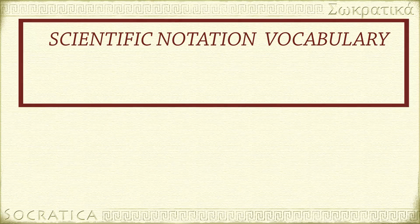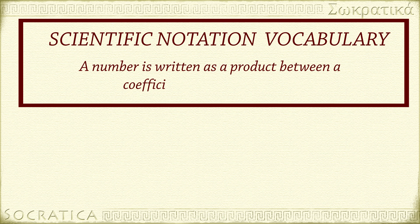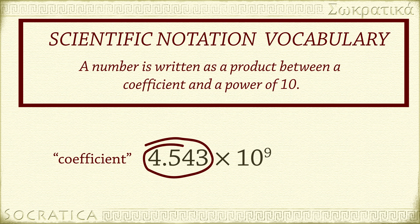A quick word about vocabulary. We say that in scientific notation, a number is written as a product between a coefficient and a power of 10. Here you can see on the left is the coefficient. It's always a number between 1 and 10. The coefficient is multiplied by a power of 10, and it can be either a positive or a negative power of 10. 10 is the base, and this is the exponent. Recognizing each of these parts is important when it comes to adding and subtracting numbers in scientific notation.